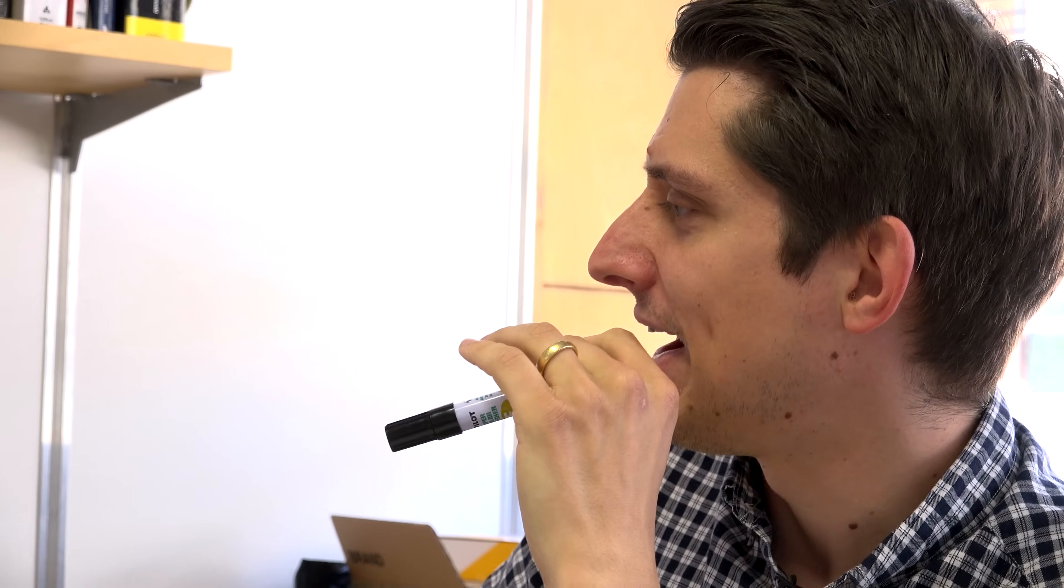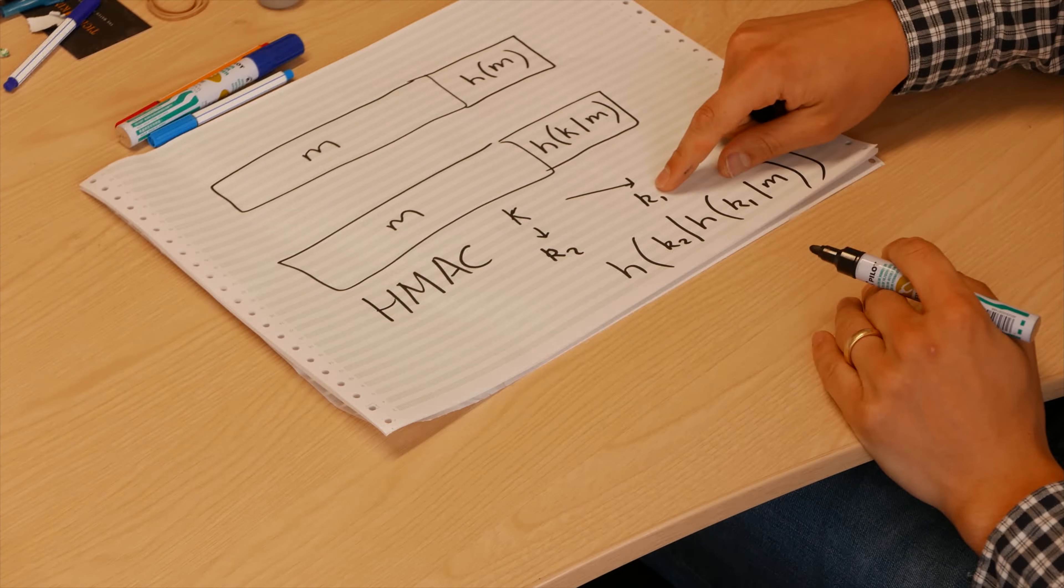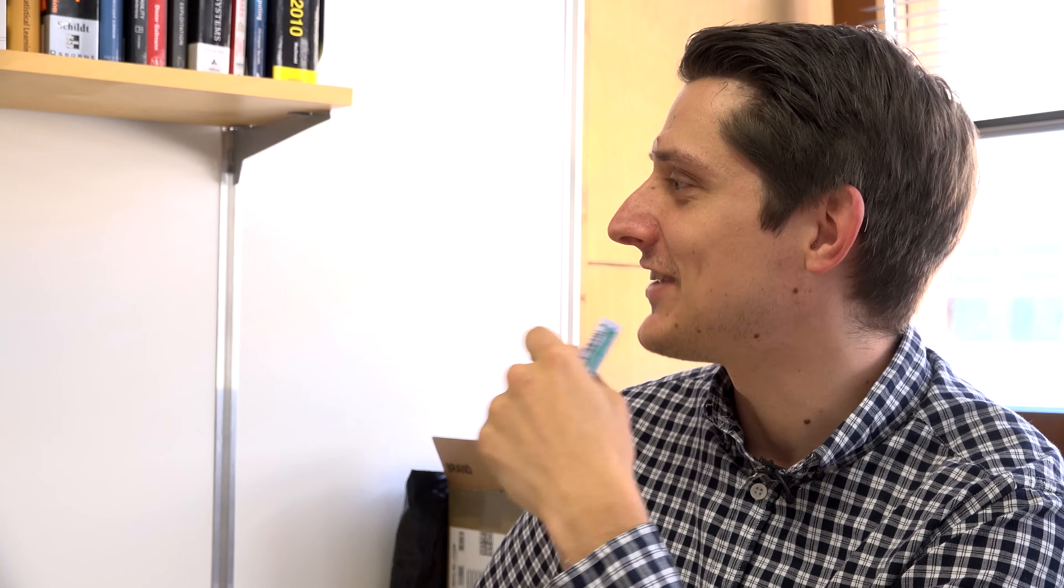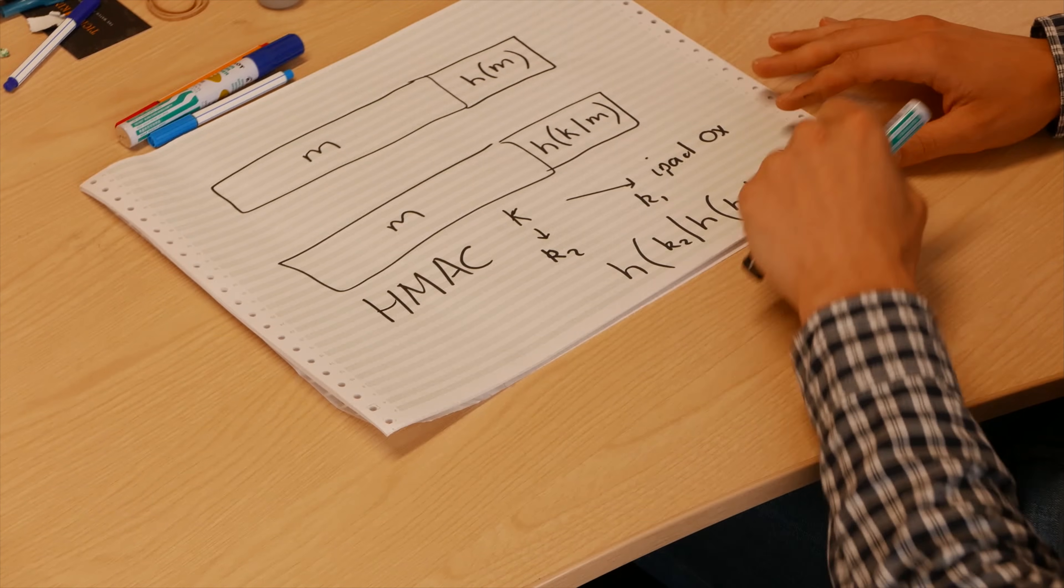So we have one constant—let me just confirm what they are—one's 36, I think. The inner pad is 36 and the outer pad is 5C. This inner pad here is the I-pad. What came first, the iPad or the I-pad? Oh hang on a minute, I think the HMAC construction was first constructed in 1996, so this one did.